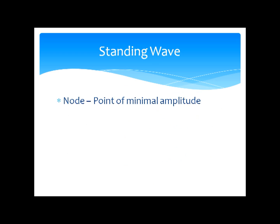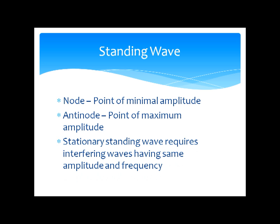Let's go over the important points picked up there. A node is a point of minimal or zero amplitude. Anti-node is a point of maximum amplitude. And a stationary standing wave requires interfering waves having the same amplitude and frequency.